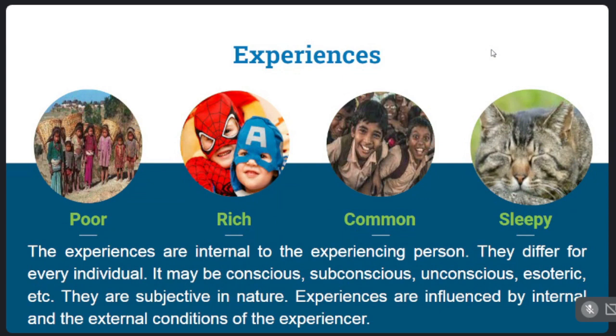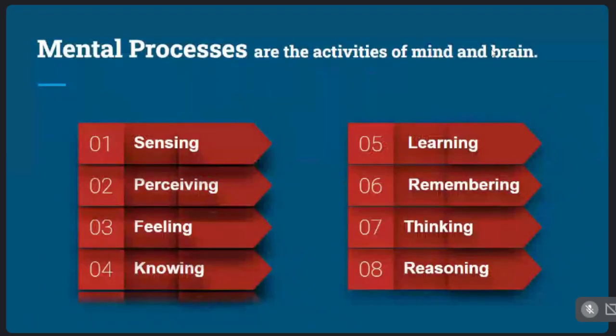Moving on to the next term: we cannot say that brain activities and mental processes are the same, although they are interdependent. Mental activities and neural activities are mutually overlapping processes.